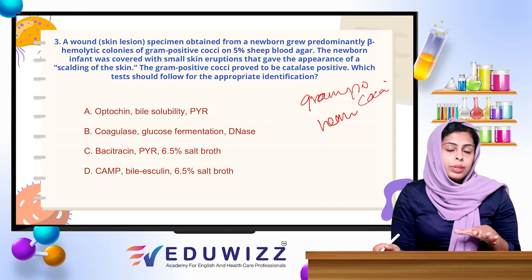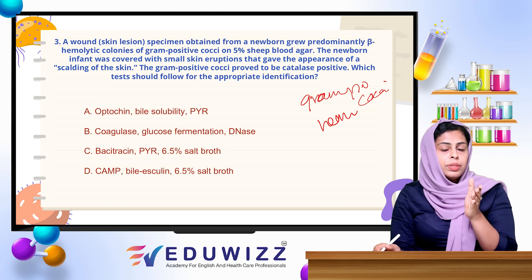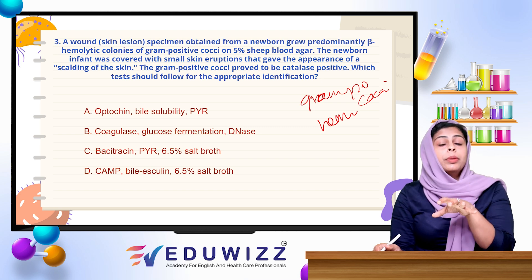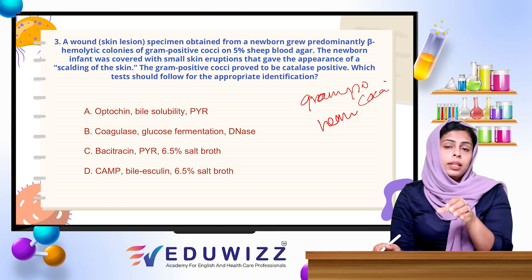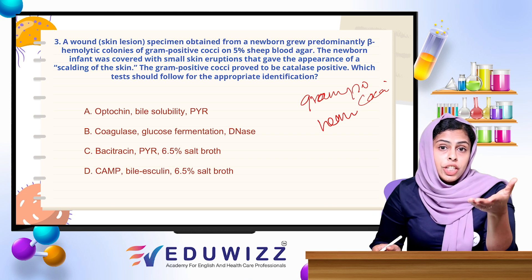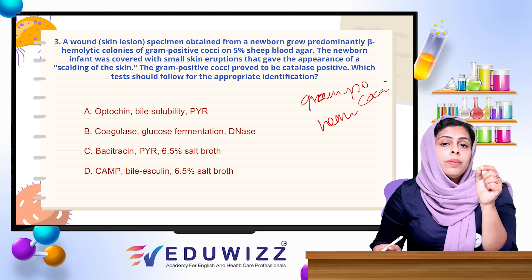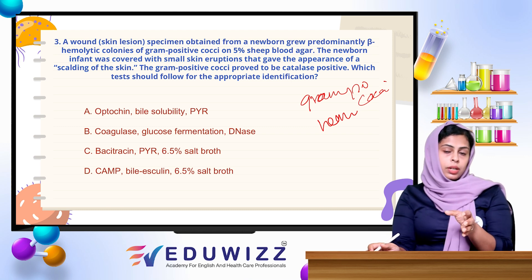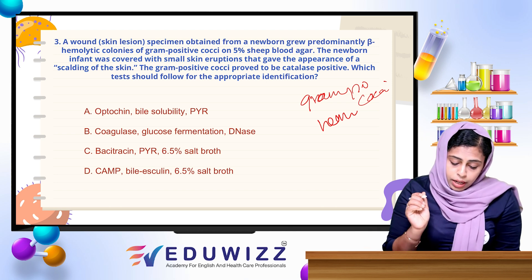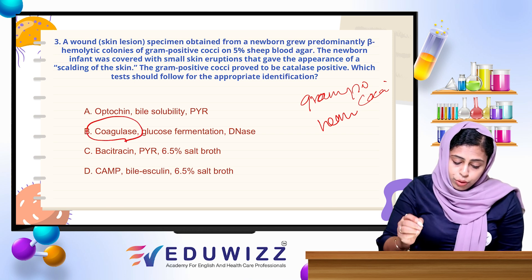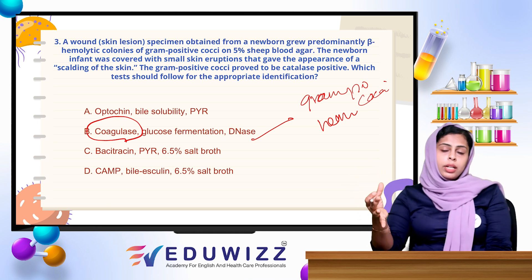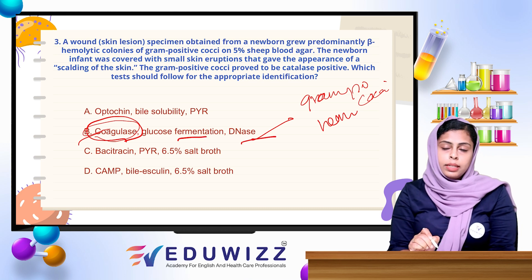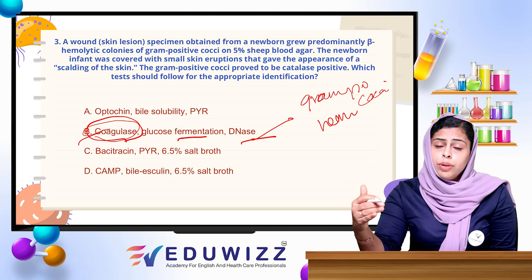Scaled skin syndrome involves two organisms. First one is Staphylococcus aureus, second one is Streptococcus pyogenes — sorry, Staphylococcus aureus, Streptococcus pyogenes. In this case, the two organisms are catalase positive. We can choose answer B. There are specific confirmatory tests: coagulation, glucose fermentation, and DNase. These are all confirmatory tests for Staph aureus.